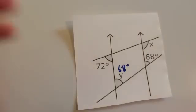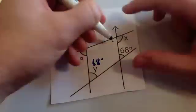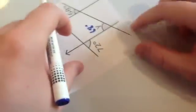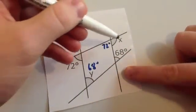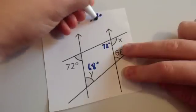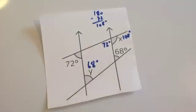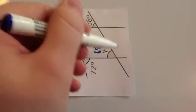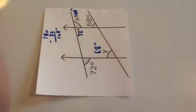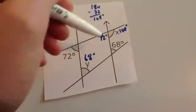Now let's calculate X. Looking at corresponding angles, this angle is the same as this angle here, so this angle is 72 degrees. If we take 72 away from 180, we'll get X — so 180 take away 72 is 108 degrees. Note that X and the 68 are not co-interior because the parallel lines are vertical, not horizontal. The 72 and the corresponding angle are the same, so X is 108 because they're on a straight line.